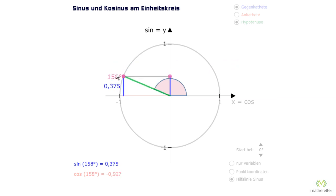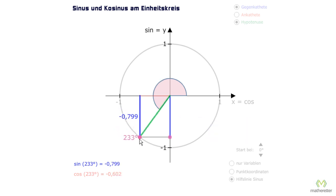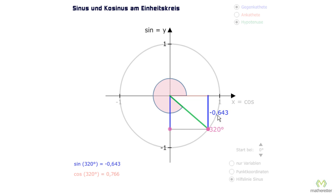And as we see, if we go over 180 degrees, on the y-axis we are in the range 0 to minus 1. Specifically, minus 0.515; that is, the sine of 211 degrees is minus 0.515. And now if we head to 270 degrees, we see we reach minus 1. And if we go further from 270 degrees to 360 degrees, the sine value increases, so the negative value goes to 0, until we finally reach 0 at 0 degrees or 360 degrees.